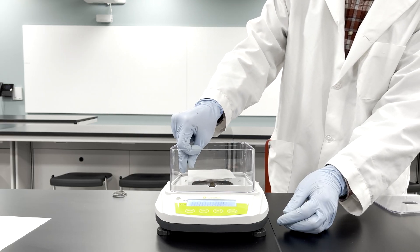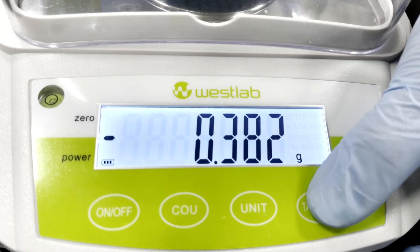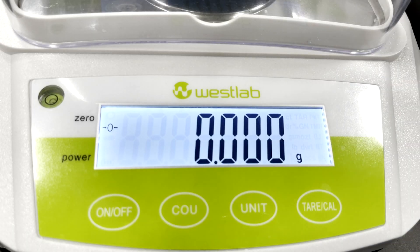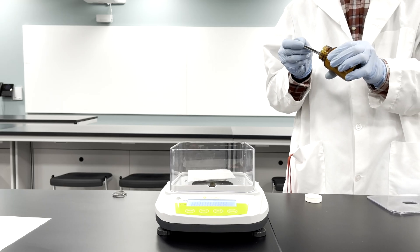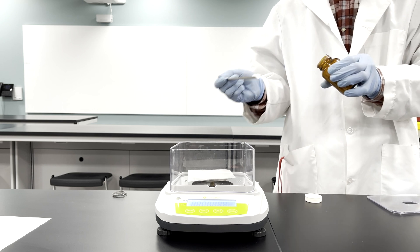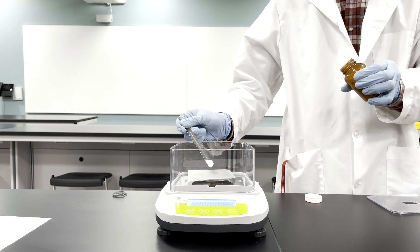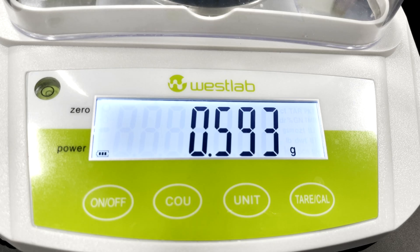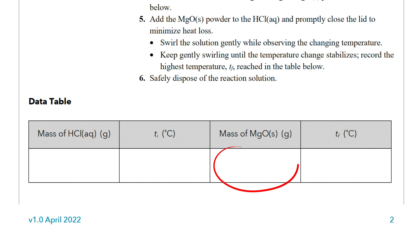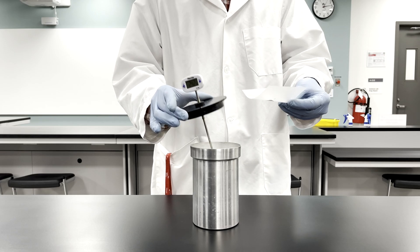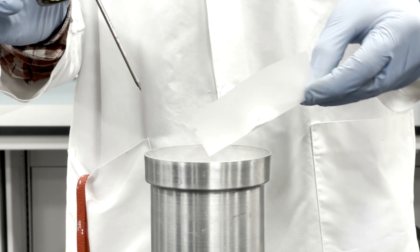Place weighing paper on the electronic balance and zero the balance. Using the spatula, add between 0.5 and 0.6 grams of magnesium oxide to the paper. Record the exact mass in the data table. The magnesium oxide is then added to the acid in the calorimeter.